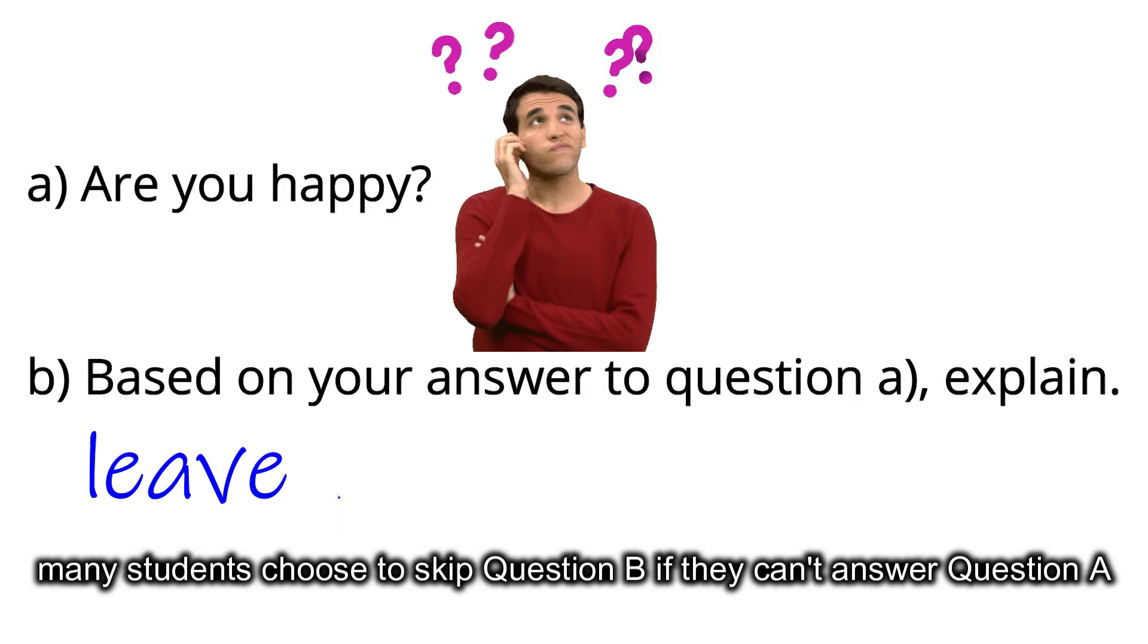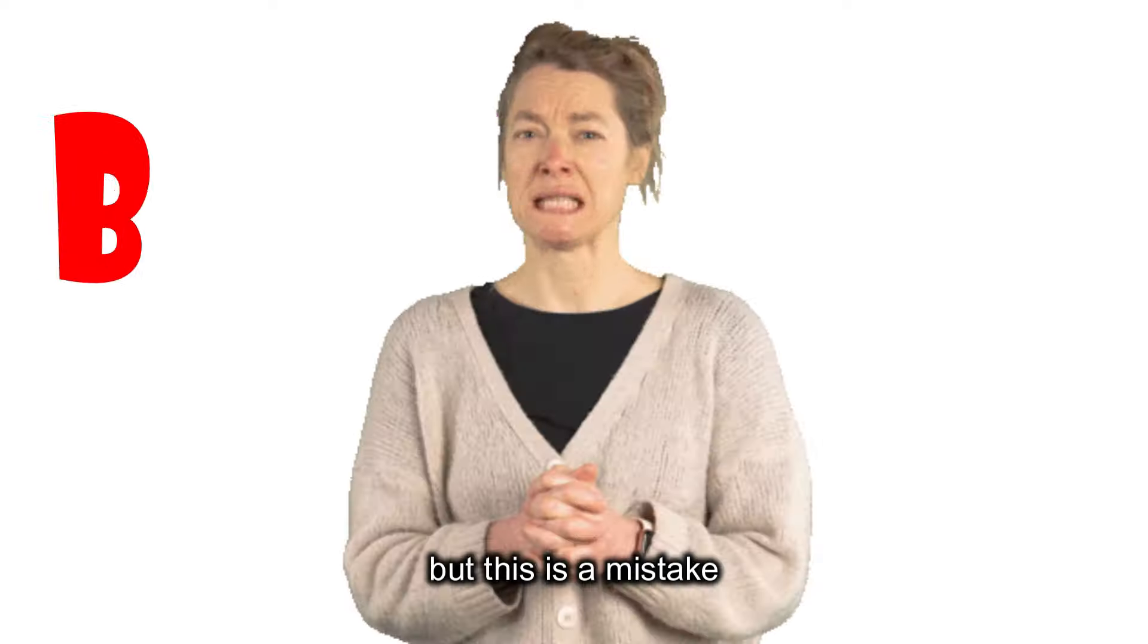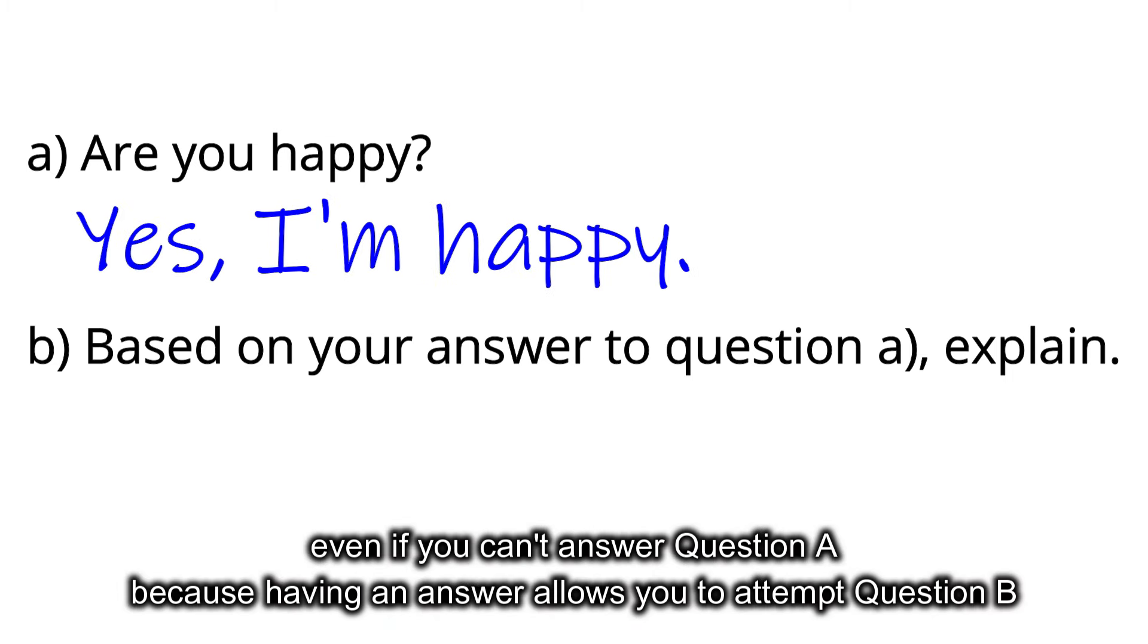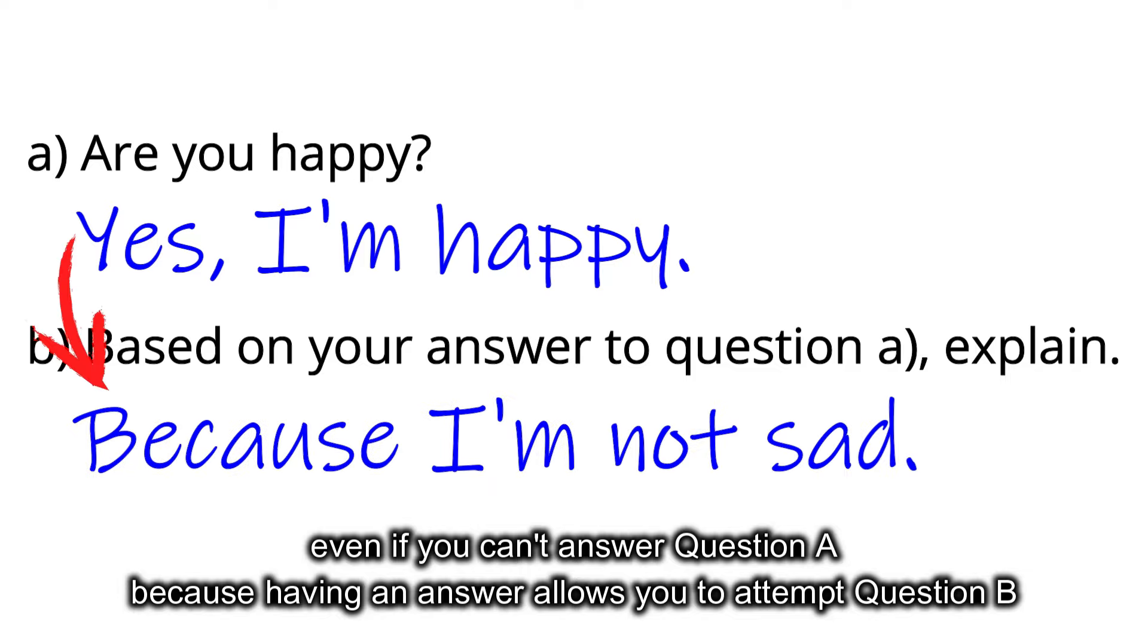Many students choose to skip question B if they can't answer question A, but this is a mistake. The correct approach is to write something, anything, even if you can't answer question A, because having an answer allows you to attempt question B.